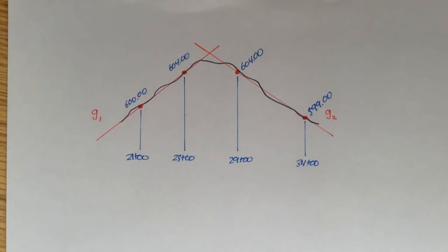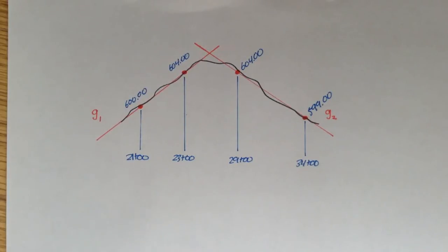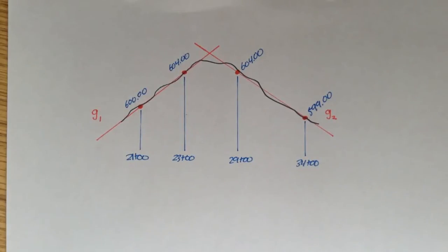Before we get into any examples that solve vertical curves, I want to take a look at this quick example first and get more familiar with some of the terms and expressions we've used in the grading videos, as well as some of the terms in the previous vertical curves videos. In this example, we're not going to actually look at a vertical curve, but we are going to look at the tangents used to create a vertical curve. We're going to explore things like PVI, or the point of vertical intersection, elevation, stationing, and just dealing with tangents in general.